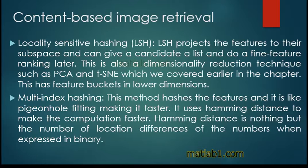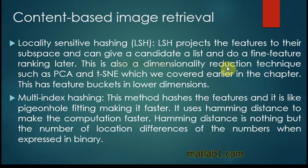The searching of the image may take a lot of time, as a brute force linear scan is slow. Hence, some methods for faster retrieval are required. Locality-sensitive hashing, LSH, projects the features to the subspace and can give a candidate list and do fine feature ranking later. This is also a dimensionality reduction technique, such as PCA and TSNE, which we covered earlier in the chapter. This has feature buckets in lower dimensions.